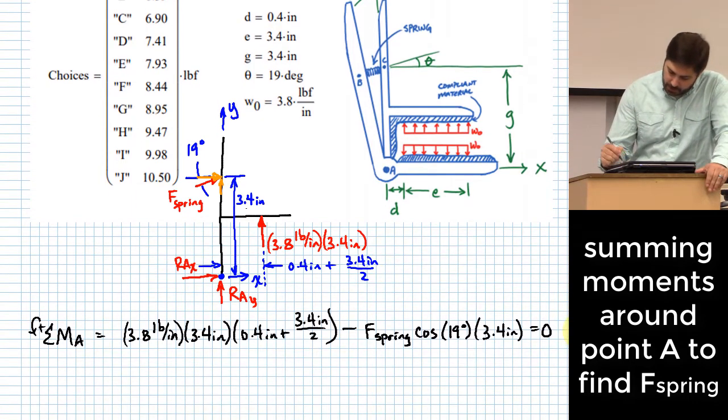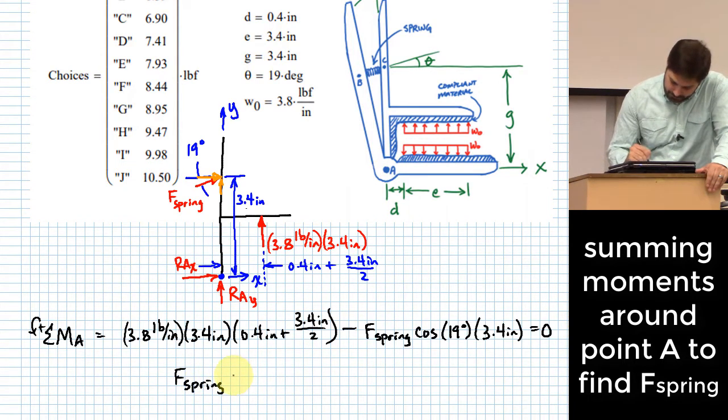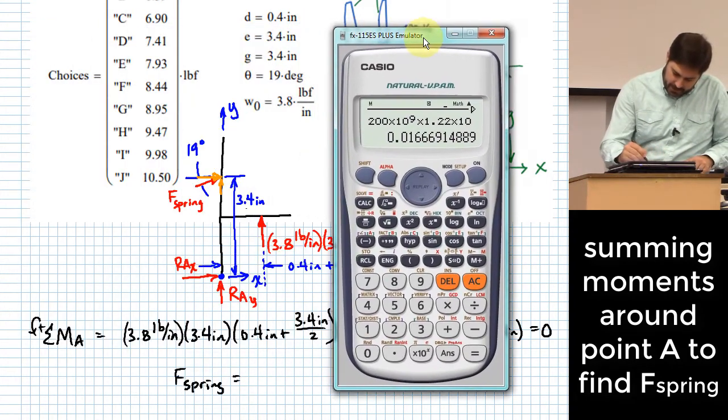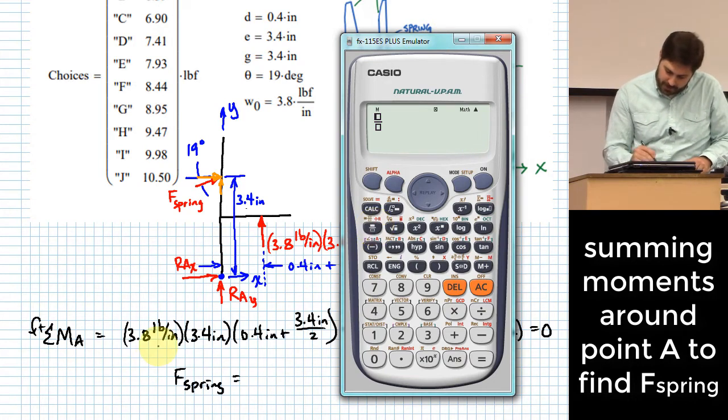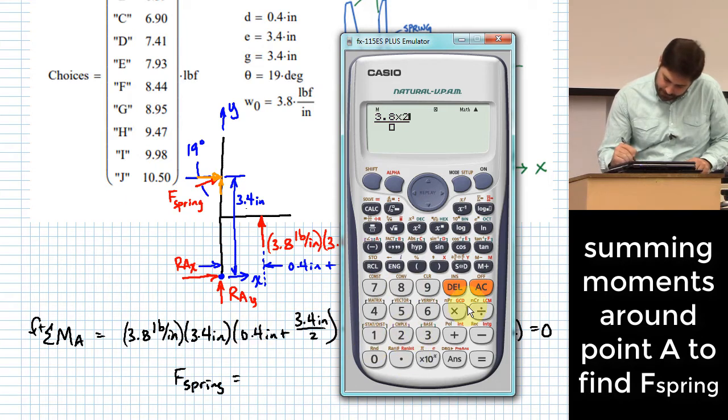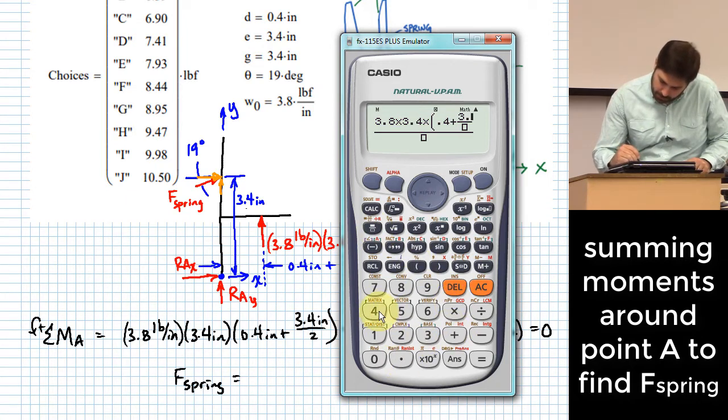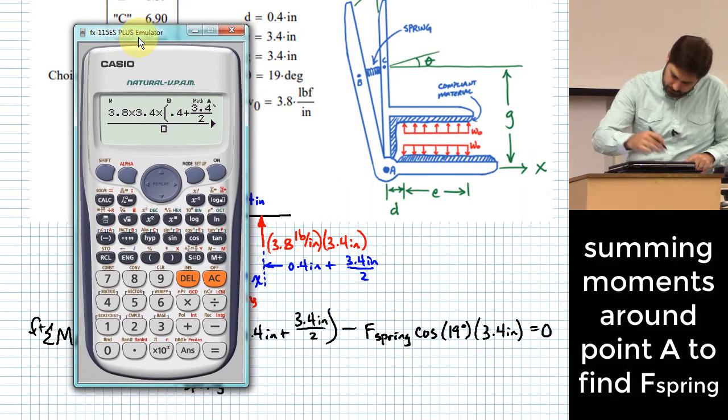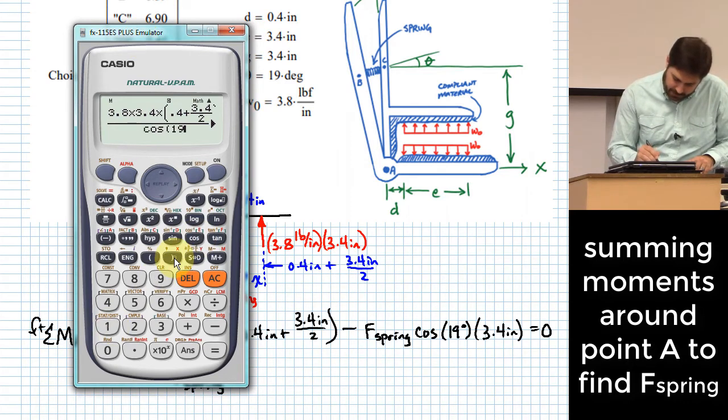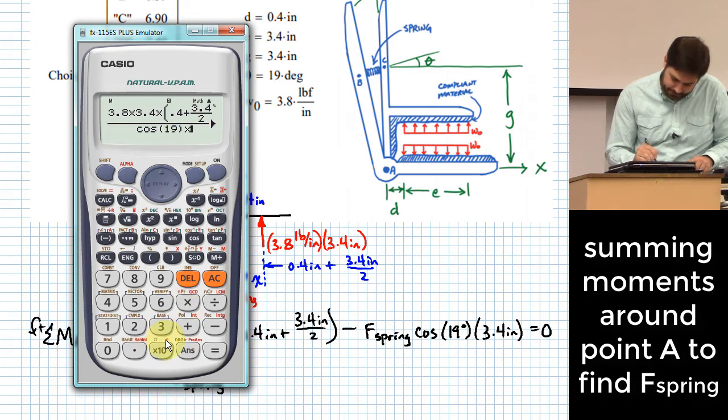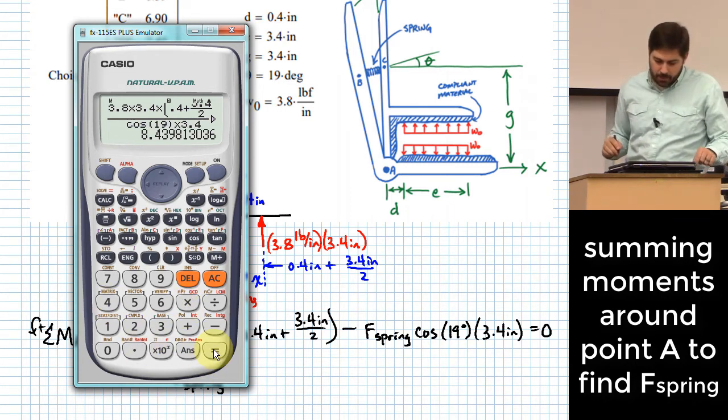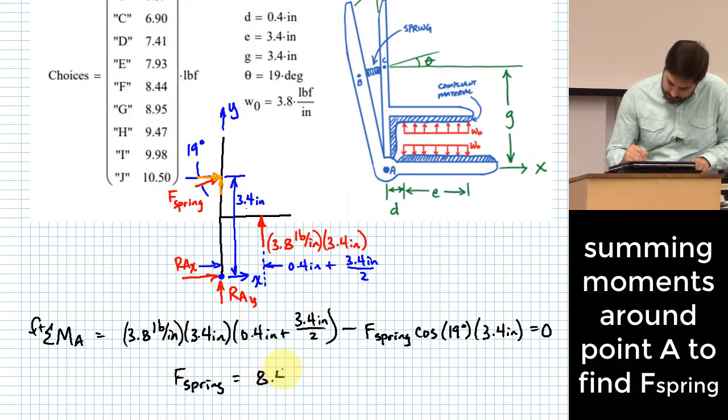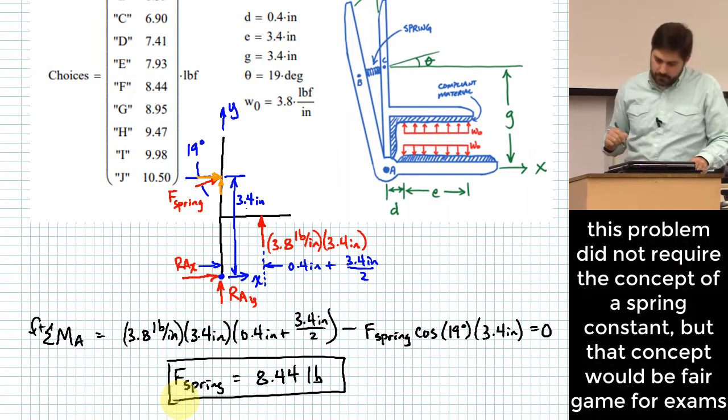Those are my only rotational effects I have around point A, which means I can now take this equation and solve for F-spring. Okay, probably the easiest way to do that is to go ahead and take a fraction. That is 3.8 times 3.4 times 0.4 plus 3.4 over 2. Okay, divided by the cosine of 19 degrees times 3.4 inches. This gives me 8.44, we'll say. This is going to be in pounds.